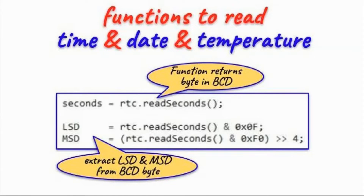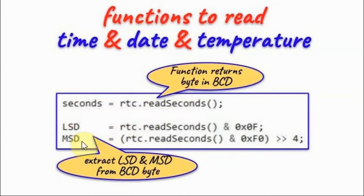Now we look at the functions used to read time, date, and temperature from the DS3231. We begin with function read_seconds, which returns a byte value that can be stored in a variable. This byte value is in binary coded decimal, so we need to extract the least significant digit and the most significant digit of the seconds value. One expression is used to extract the least significant digit, and another expression is used to extract the most significant digit.